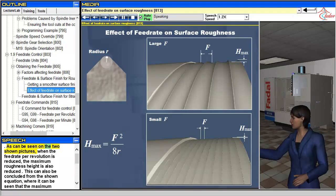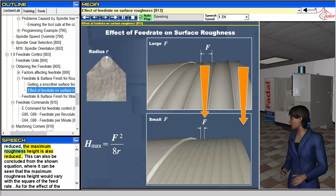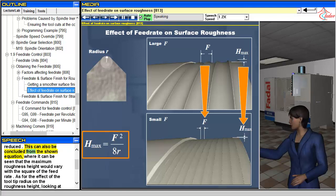As can be seen on the two shown pictures, when the feed rate per revolution is reduced, the maximum roughness height is also reduced. This can also be concluded from the shown equation.